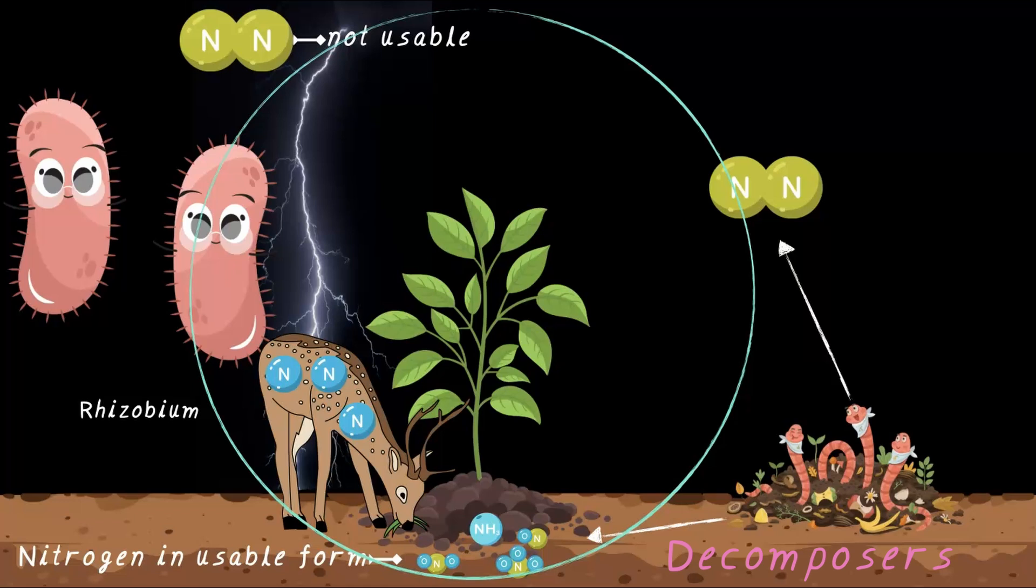This whole process—the journey of nitrogen from atmosphere to plants to animals and back to the atmosphere—is what we call the nitrogen cycle. Let's see the nitrogen cycle in a little more detail, in a more coherent way.